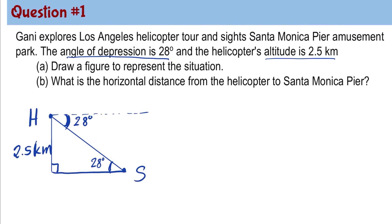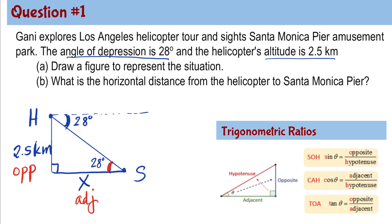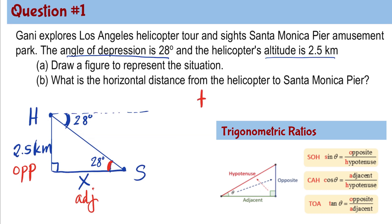Letter B, what is the horizontal distance from the helicopter to Santa Monica Pier? So we need to find this horizontal distance X. To solve for X, we need to set up an equation using the trigonometric ratio. In reference to the 28 degree angle, X is the adjacent side and 2.5 kilometers is the opposite side. So the trigonometric ratio that deals with opposite and adjacent is tangent.